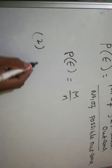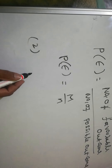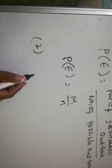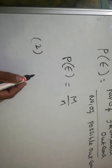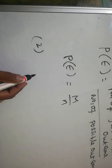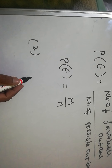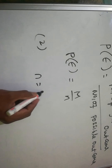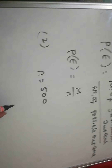See question number 2 in the exercise. A coin is tossed at random 500 times, and we get heads 245 times and tails 255 times. What is the probability of getting a head and a tail? So total number of possible outcomes N equals 500.